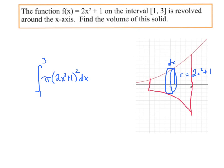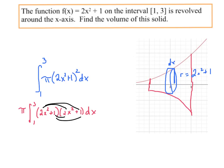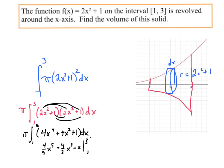We then integrate that, in our case from 1 to 3. If you wanted to actually integrate this, you pull the π out. I would write this out as (2x² + 1)(2x² + 1) and multiply everything out to get 4x⁴ + 4x² + 1, then integrate to get (4/5)x⁵ + (4/3)x³ + x evaluated at 3 and 1, multiplied by π. In the interest of time I'm going to rely on the fact that you could do that.